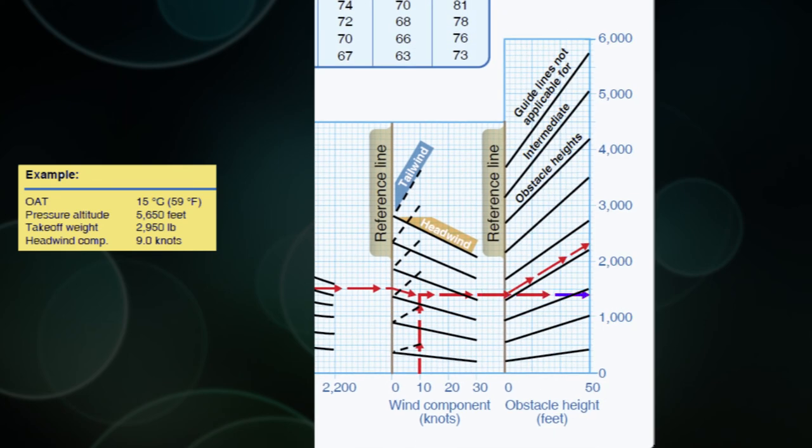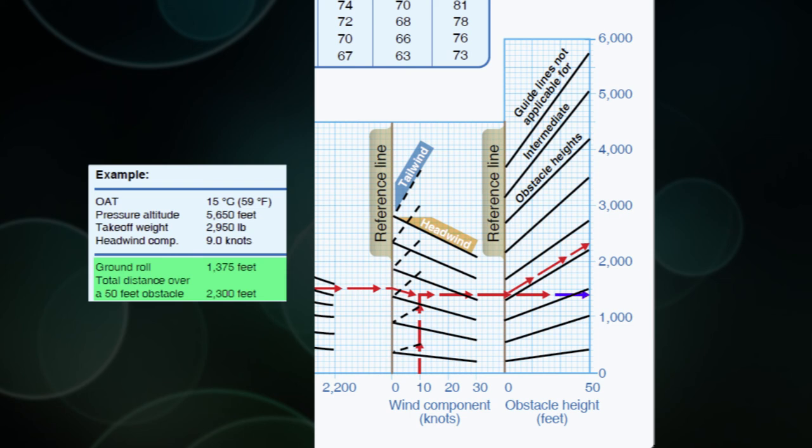If we want to know our ground roll, we go straight across, and that's going to be 1,375. And if we want to know our takeoff over 50-foot obstacle, then we follow the slant of the line to the end of the line, or 50 feet, and that happens to be 2,300 feet.